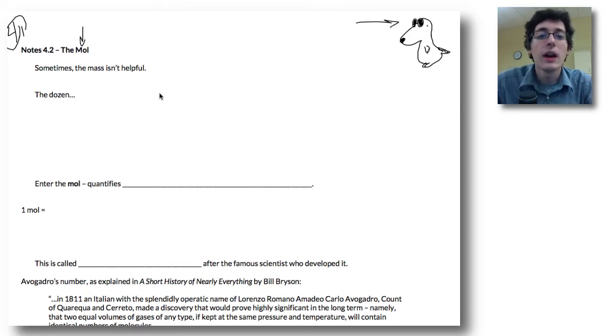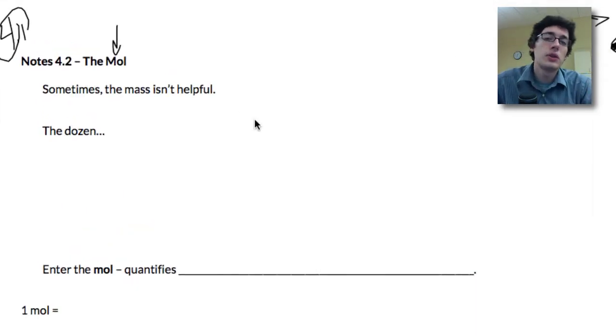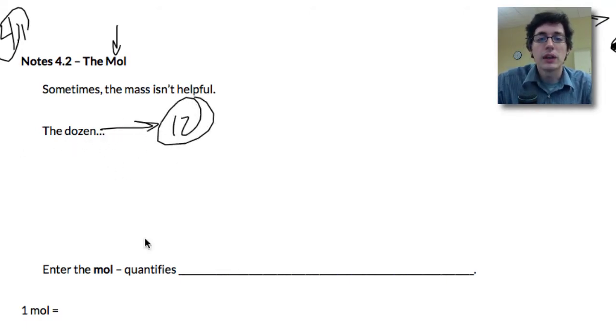And sometimes what we get to is mass is not very helpful, and this is usually when you have very small objects or very large objects, and it also comes into play when we're looking at numbers of things. So let me give you an example: a dozen of something, a dozen is always 12. It doesn't matter what you have - I can have 12 eggs, 12 pens, 12 people, 12 chairs, 12 desks, 12 cars, it doesn't matter.